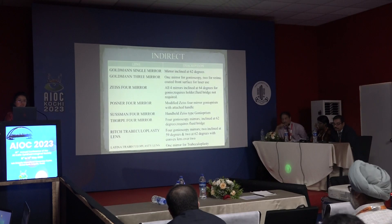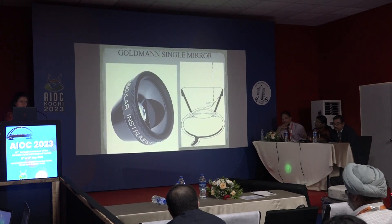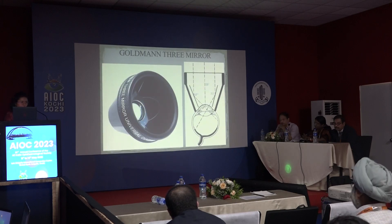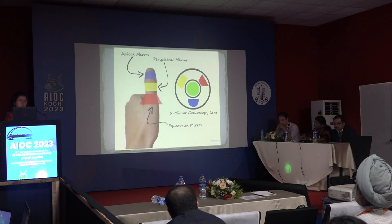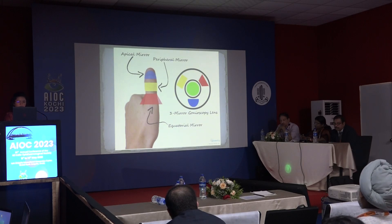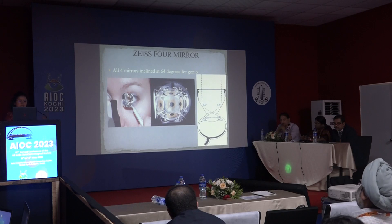In indirect gonioscopes, the most common is the Goldman single and double mirror. For residents, I think you should invest in the Goldman double mirror to start with. Then we have the Goldman three mirror, which has three lenses for not only the angle but also the mid-periphery and the equator. Then we have the Zeiss four mirror, which has four mirrors to visualize the angle.